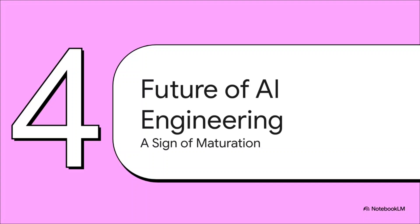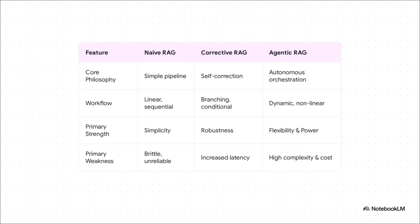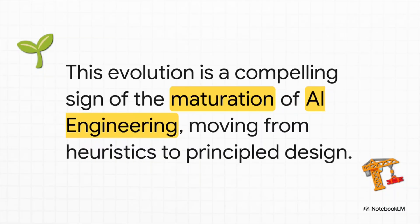When you zoom out, this whole journey from brittle Naive RAG all the way to these advanced agent systems tells us something really profound about where AI engineering is heading. The progression is crystal clear: you start with Naive RAG, a simple but brittle pipeline; then Corrective RAG, which adds branching and self-correction to become robust and reliable; and finally Agentic RAG, a dynamic, non-linear system built for flexibility and raw power. It's like going from a librarian who just points you to a random shelf, to one who fact-checks your sources, to a full-blown research team managed by an AI project lead.